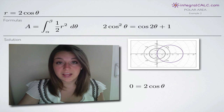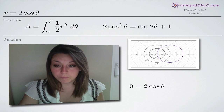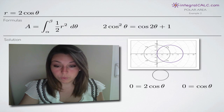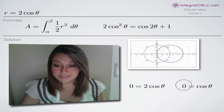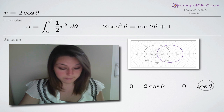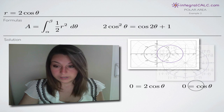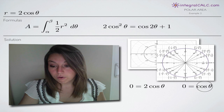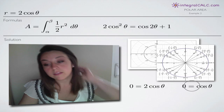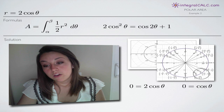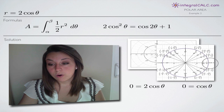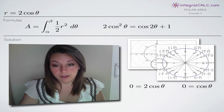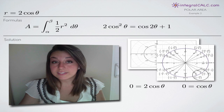We'll plug those in for alpha and beta and then start working with our integral. We're going to solve for theta. Dividing both sides by two, we're left with zero equals cosine of theta. To solve this equation, we need our unit circle. We need to know where cosine of theta equals zero, which means, with the unit circle, we're looking at the x-coordinates along the unit circle for a given angle.